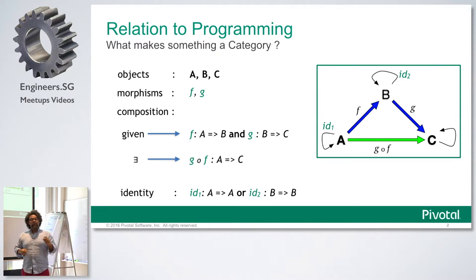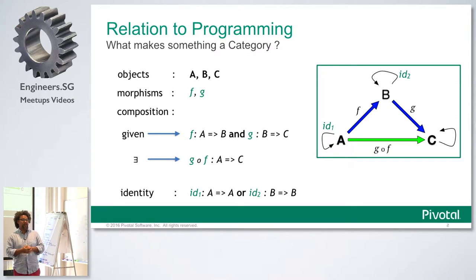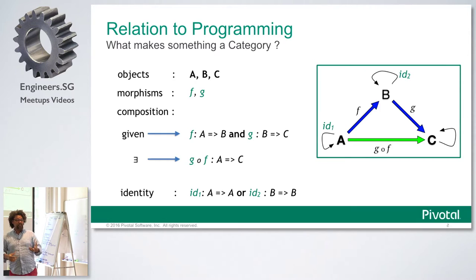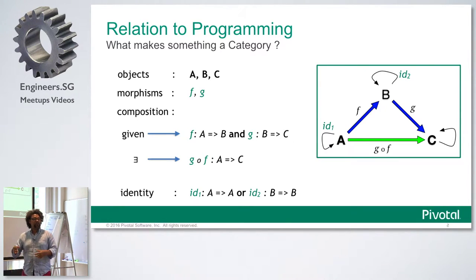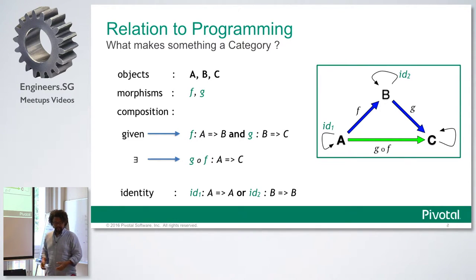If you haven't done functional programming before, you may not be aware that functions themselves are first-class objects, meaning functions can be passed as parameters. For the purposes of category theory, we want our A's, B's, and C's also to be functions — meaning the input and output of our functions F, G, and G following F can potentially also be functions, not just necessarily data.